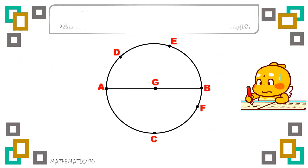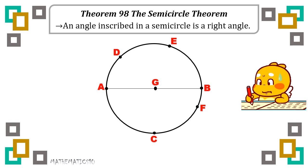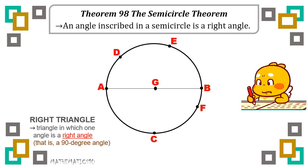Let's start with the first theorem mentioned, theorem 98, the semicircle theorem. An angle inscribed in a semicircle is considered a right angle. First of all, what is a right angle? I'll just relate it to a right triangle. A right triangle is a triangle in which one angle is a right angle — an angle which measures 90 degrees.